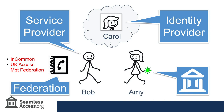An attribute might be affiliation information, such as a department or role, or more personal information, such as a name or email address. In this example, no attributes were shared.